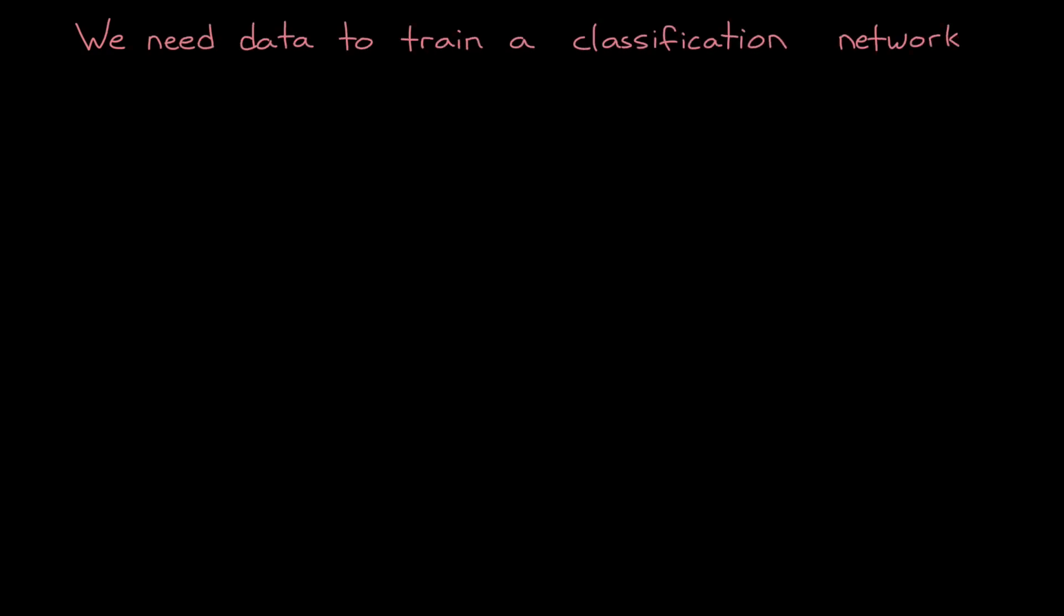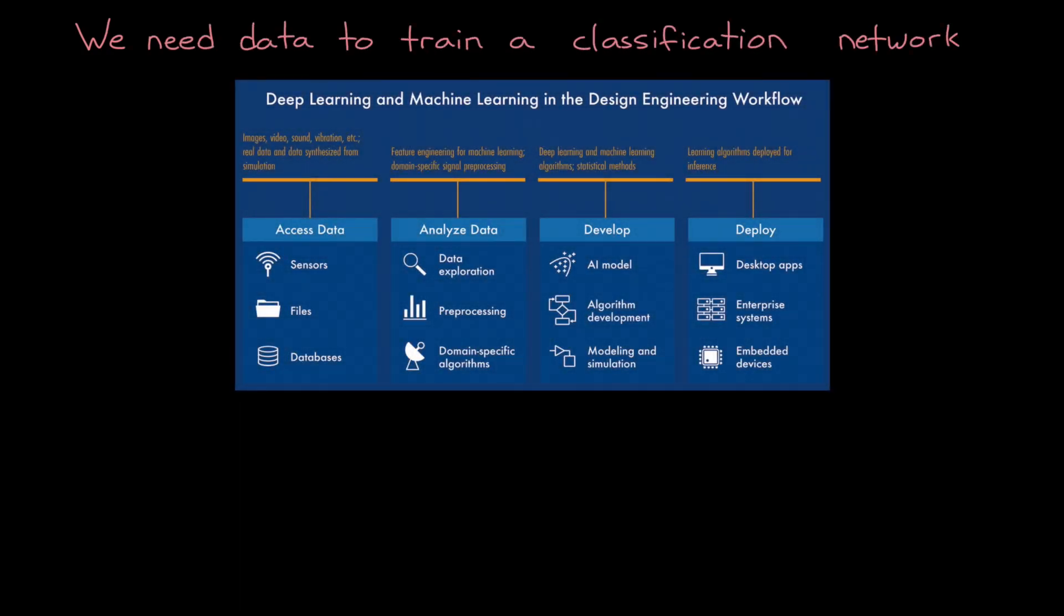In the last video, we talked about how we need data to train a classification network. However, in many cases, data in its raw form, the form in which it was collected, might not be ideal for training a network. There are some changes that we can make to the data that are often desired, or sometimes necessary in order to make training faster, simpler, or to ensure that it converges on a solution in the first place. So in this video, that's what we're going to talk about.